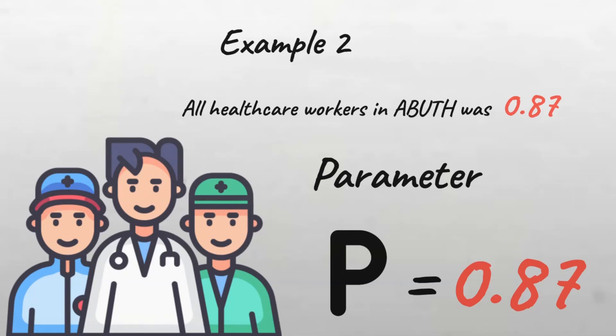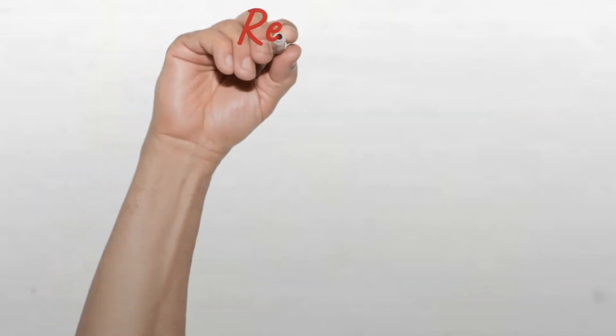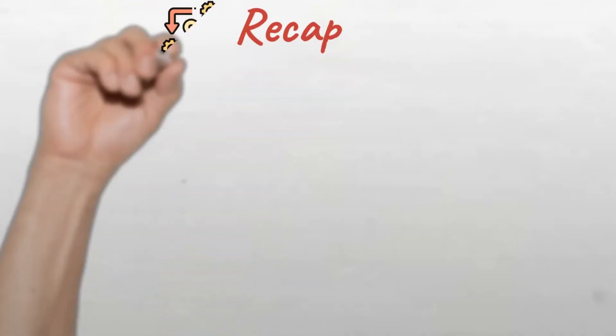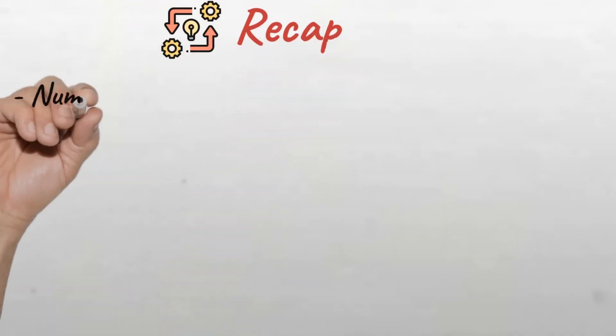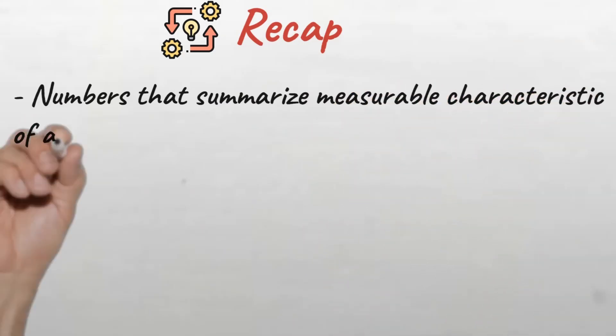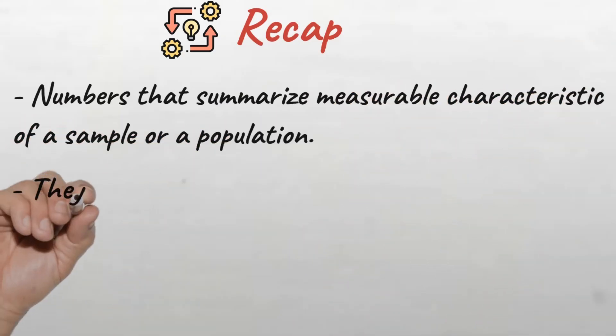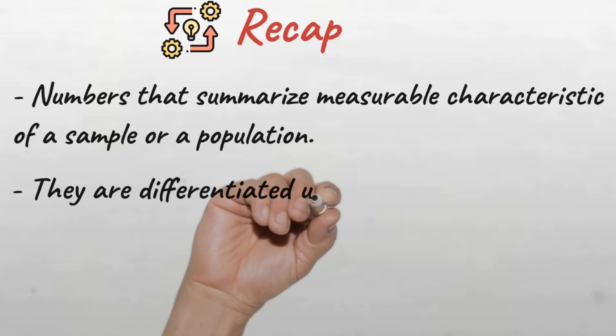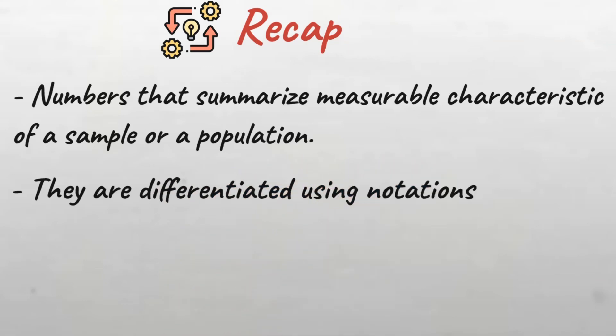Now you see how important it is to differentiate these two. To recap, statistics and parameters are numbers that summarize any measurable characteristic of a sample or a population. Parameters and statistics are differentiated using different notations.